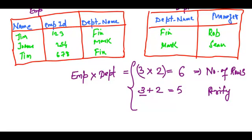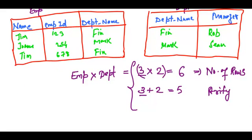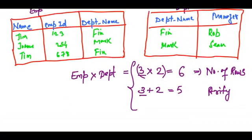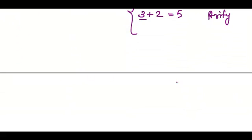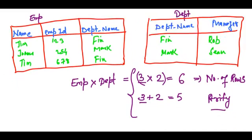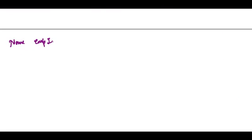Do not confuse the three values: the first three represents the columns name, employee ID, and department name; the second three represents Jim, Joanne, and Tim. Our result would have five columns: name, employee ID, department name, department name, and manager.